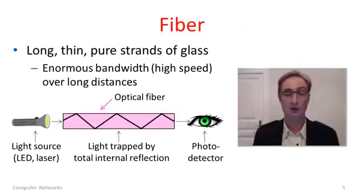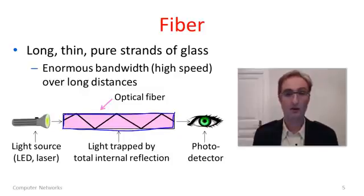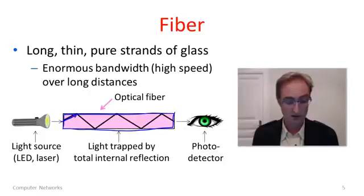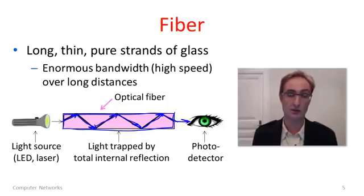A different kind of media is fiber, or fiber optic cables. A picture is shown here just of the operation of a fiber. The fiber is here in pink. A fiber is really just a very long, thin, pure strand of glass. The way it operates is when you shine light in from a light source — that could be a laser or an LED, a light emitting diode. The fiber is so thin that the light bounces around inside it and doesn't come out until it gets to the other end, where you can detect it with a photo detector.